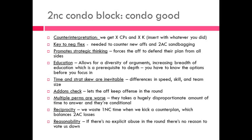Here is a 2NC condo block — the negative says condo's good. You have a counterinterpretation: we get X counterplans and X Ks, so you insert whatever you ran. If the 1NC was two counterplans and one K, you'd say: 'Counterinterpretation: we get two condo plans and one K.' Then you have standards like Neg-Flex, promoting strategic thinking, education, time-and-strats, add-ons as a check, multiple worlds, and reciprocity. Just like topicality, the negative makes a reasonability claim: we ran a reasonable number of conditional advocacies, so you shouldn't vote us down.